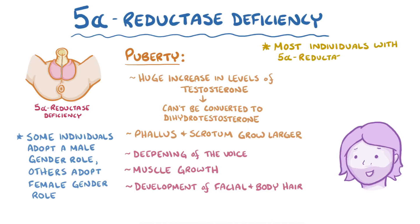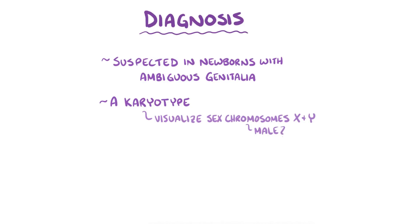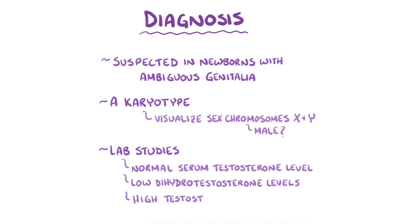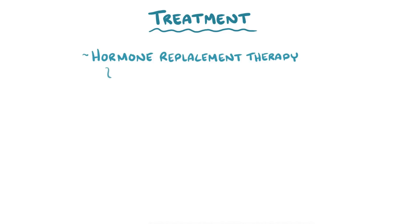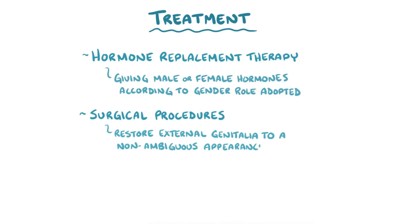Most individuals with 5-alpha-reductase deficiency also struggle with infertility. Diagnosis is usually suspected in newborns with ambiguous genitalia. A karyotype can be used to visualize the sex chromosomes X and Y, and ensure that the individual is genetically male. Lab studies usually show normal serum testosterone level and low dihydrotestosterone level, and therefore a high testosterone to dihydrotestosterone ratio. Treatment focuses on hormone replacement therapy, giving male or female sex hormones according to the gender role adopted by the individual. Surgical procedures can also be done to help restore external genitalia to a nonambiguous appearance, and for those struggling with infertility, assisted reproduction techniques are useful too.